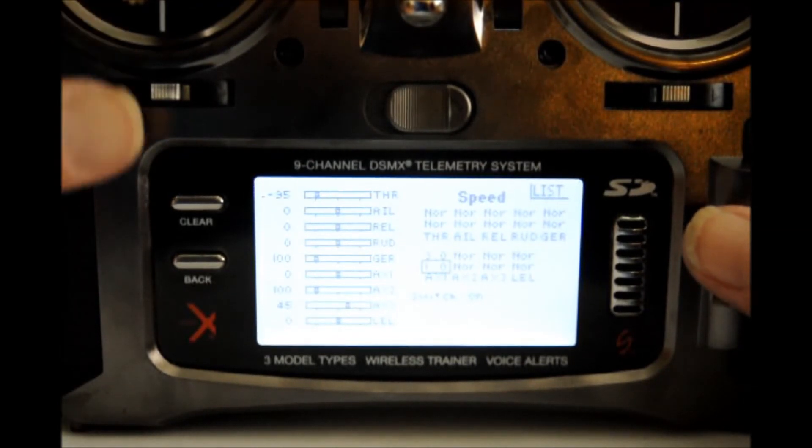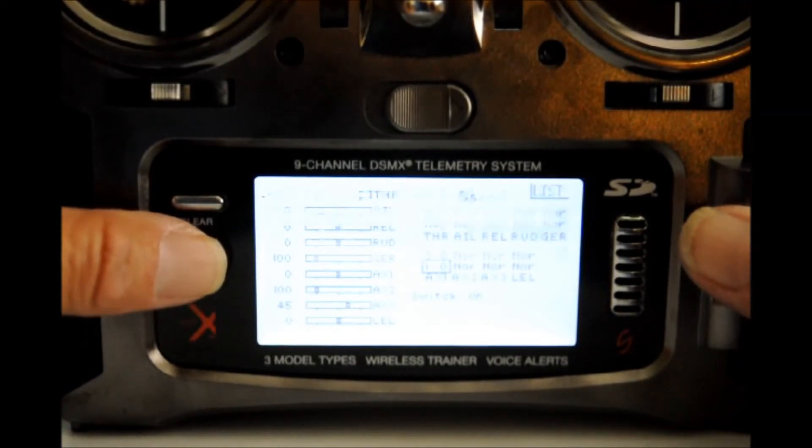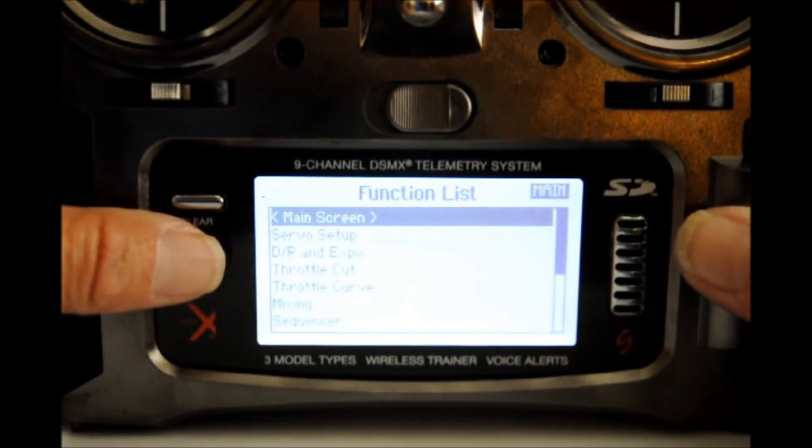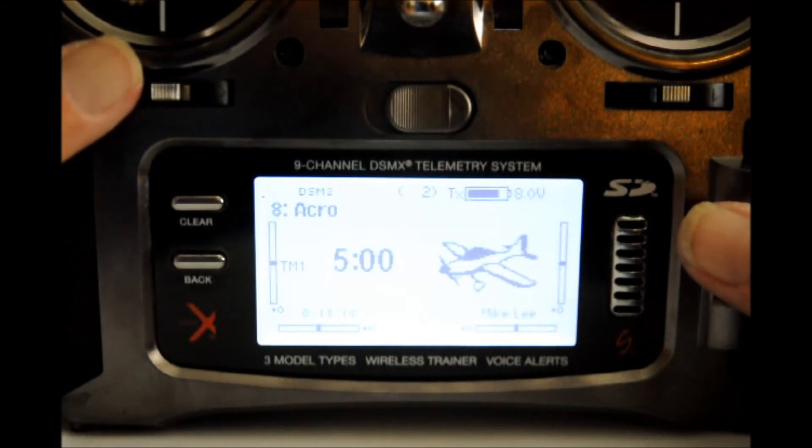That's it. Now we just hit the back button, go to the main screen, and the servo speed should now be set. Let's go on over to our simulator and see how it works.